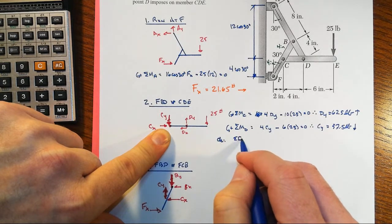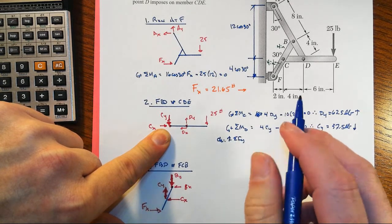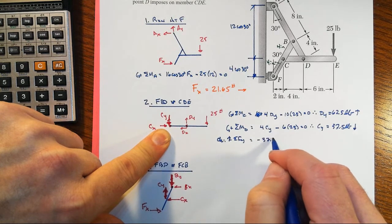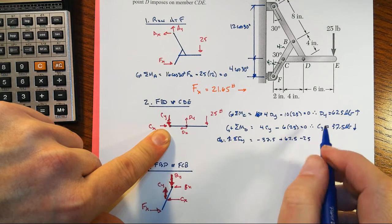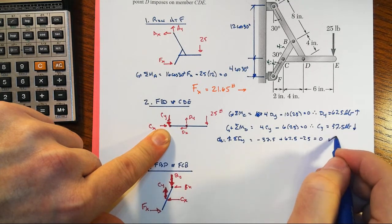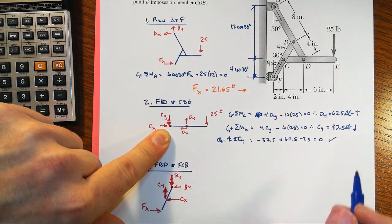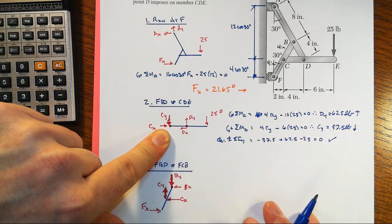We have time in this exam to check. Then sum forces in the Y—we'll take upwards positive. We have minus 37.5 plus 62.5 minus 25. That does equal zero as it's supposed to, so that means we've got those two correct.